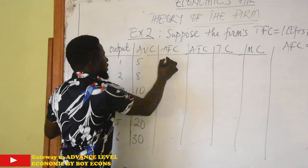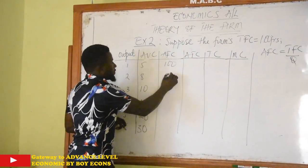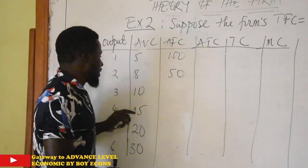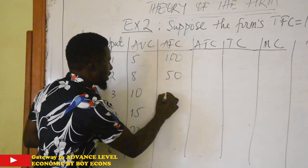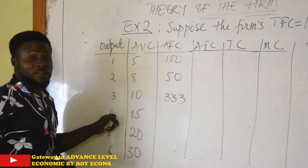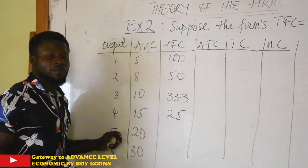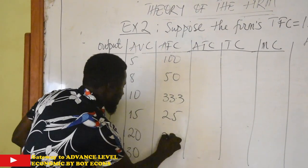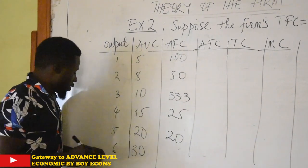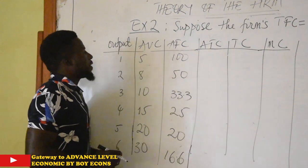100 divided by 1 gives us 100. 100 divided by 2 gives us 50. 100 divided by 3 is 33.3. 100 divided by 4 gives us 25. 100 divided by 5 gives us 20. And 100 divided by 6 is 16.6.